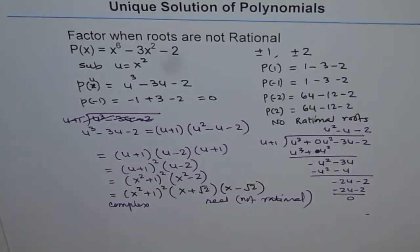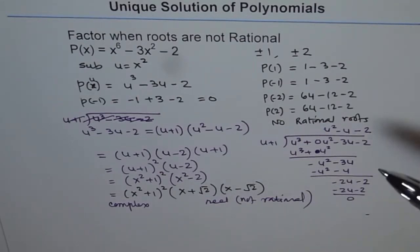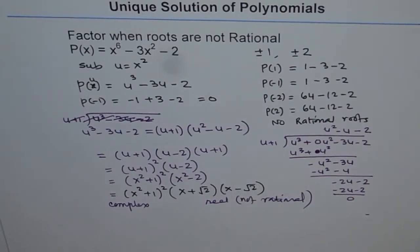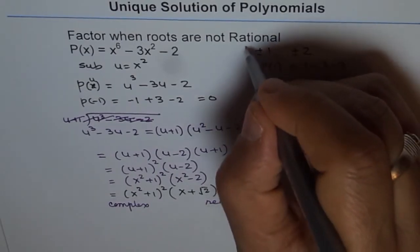The real roots are not rational — √2 is not rational because it cannot be written in the form p over q. If you don't have rational roots, it becomes very difficult to factor a polynomial and you may have to adopt the substitution technique shown here.